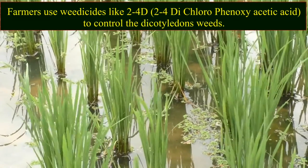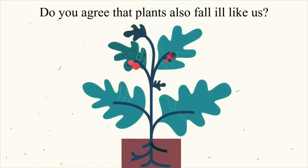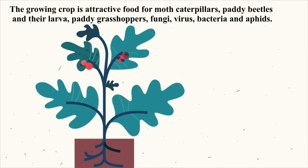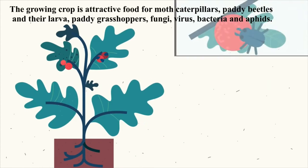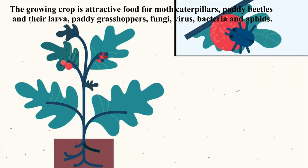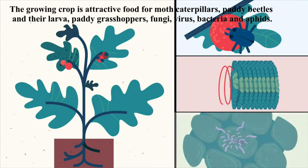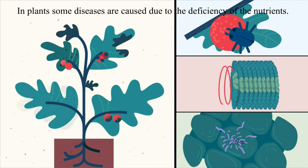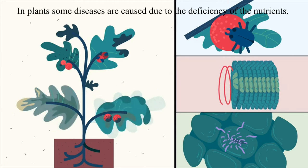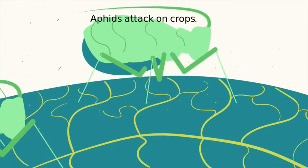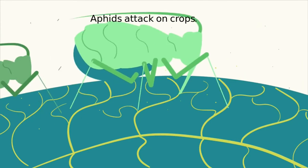Do plants also fall ill like us? The growing crop is attractive food for caterpillars, paddy beetles and their larvae, paddy grasshoppers, fungi, viruses, bacteria, and aphids. Some diseases in plants are caused due to deficiency of nutrients. Some insects like aphids and the whitefly, besides sucking plant sap, also carry viral infections. The honeydew released from aphids also attracts insects and harms crop plants.